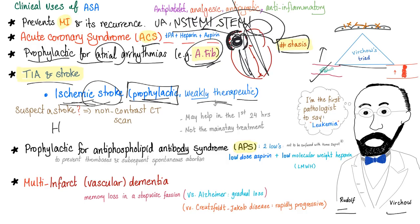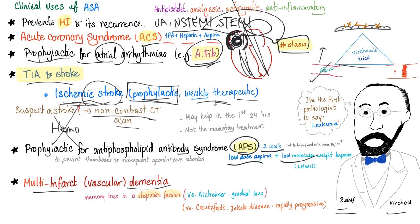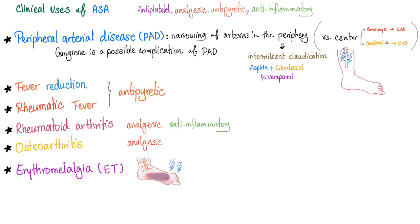How do you know if it's ischemic stroke or hemorrhagic stroke? Non-contrast CT of the head. If it's hemorrhagic, never give aspirin, never give TPA — the patient is bleeding. Aspirin is good for antiphospholipid antibody syndrome — we use low-dose aspirin plus low molecular weight heparin. Aspirin is also good for multi-infarct vascular dementia, peripheral arterial disease, fever reduction, rheumatic fever, rheumatoid arthritis, osteoarthritis, and erythromelalgia.